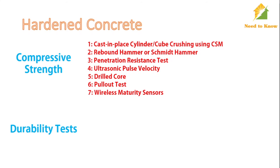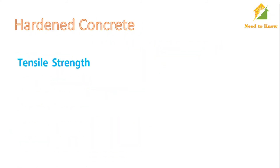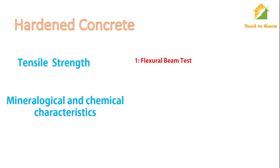The second important property is durability, especially for structures in contact with water or where the water table is high. To check durability, we can use the absorption test, rapid chloride permeability test, and permeability test. The third property is tensile strength, evaluated using the flexural beam test. The fourth property is mineralogical and chemical characteristics, which can be assessed using petrography or petrographic study to study the behavior of hardened concrete.